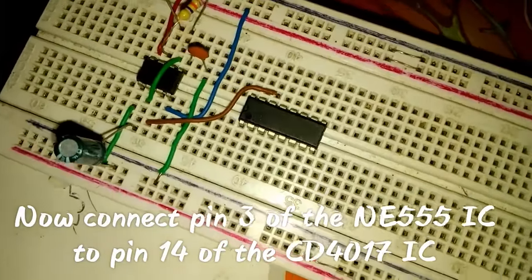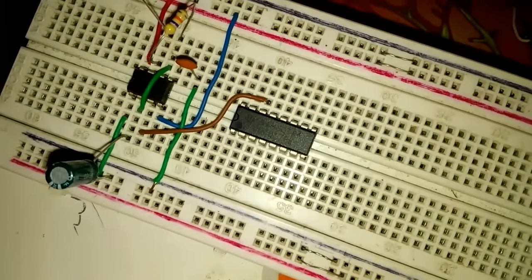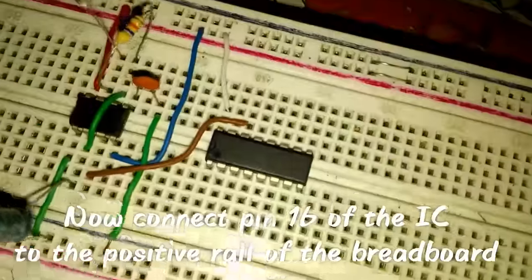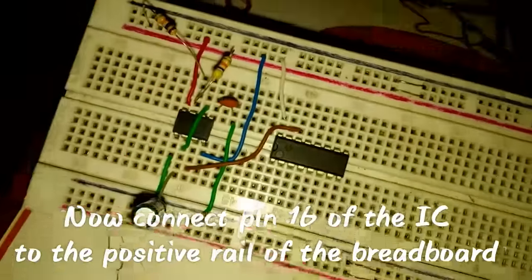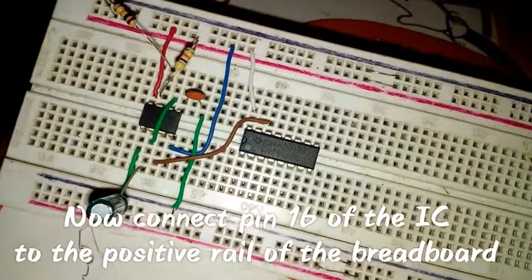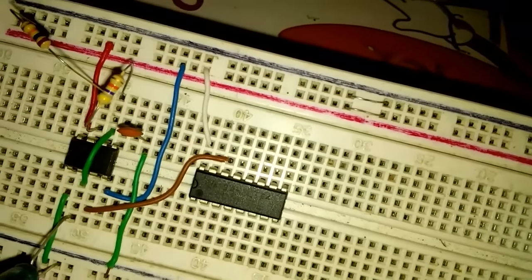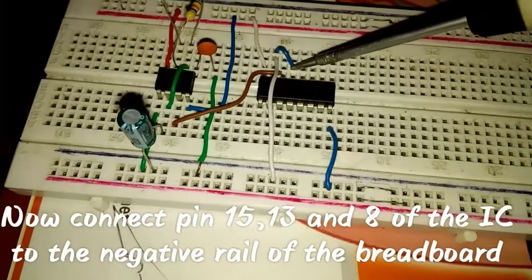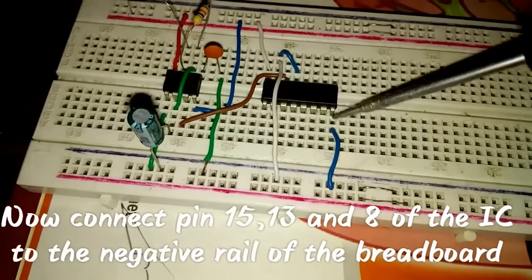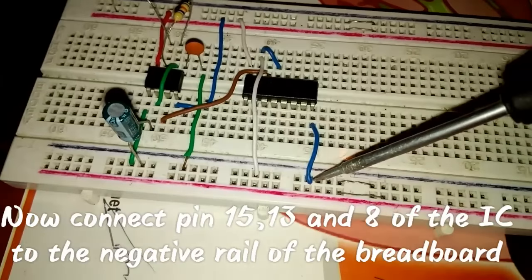Now connect pin 16 of the 4017 IC to the positive rail of the breadboard. Now connect pin 15, 13 and pin 8 of the IC to the negative rail of the breadboard.